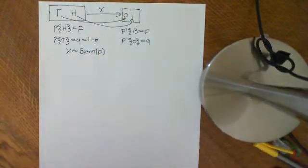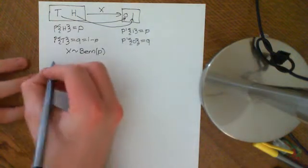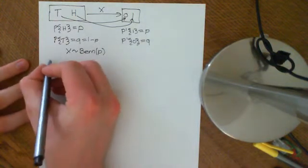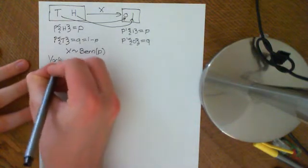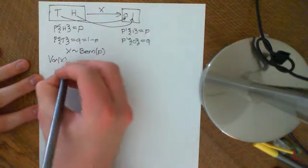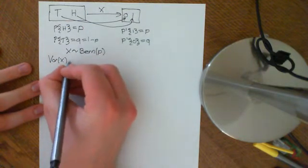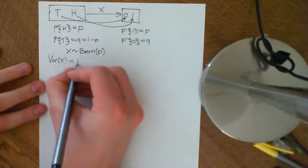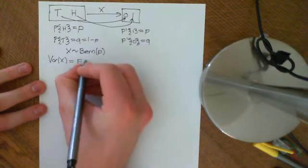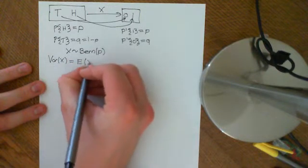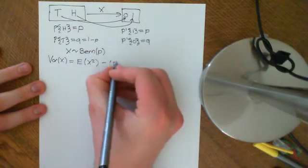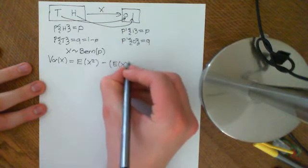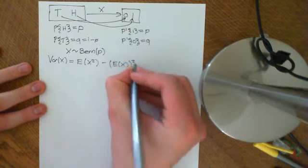That's just a reminder of what the Bernoulli distribution is. Now what we want to know is what is the variance of this random variable X, which is distributed Bernoulli p. We know that the formula for variance of X is the expectation value of X squared minus the expected value of X, and then that value squared.